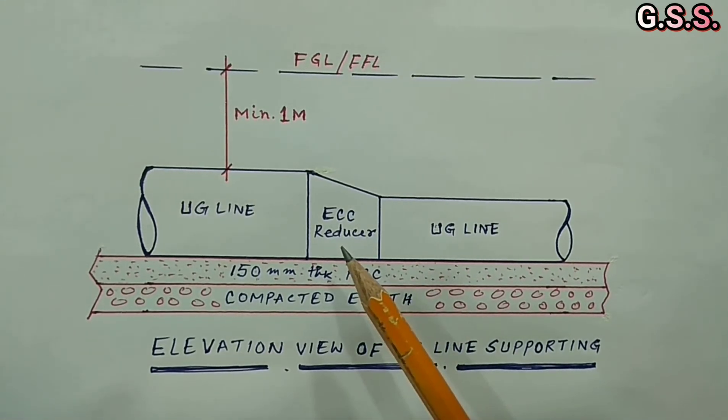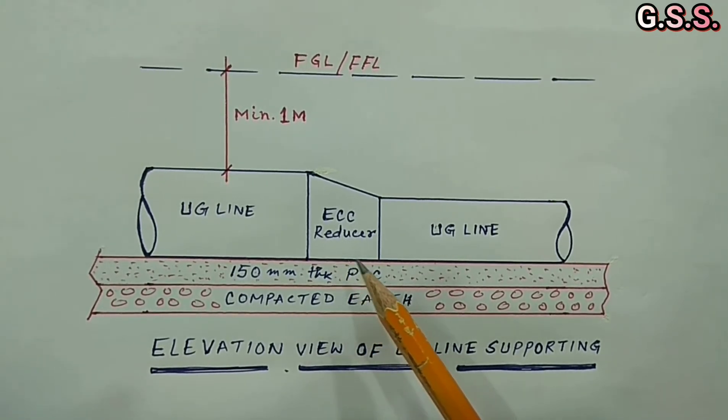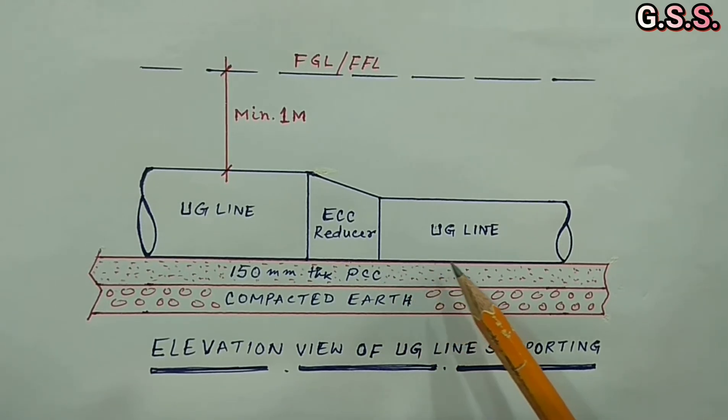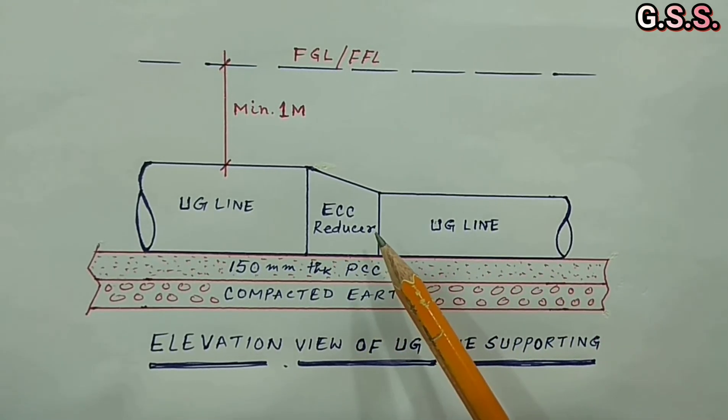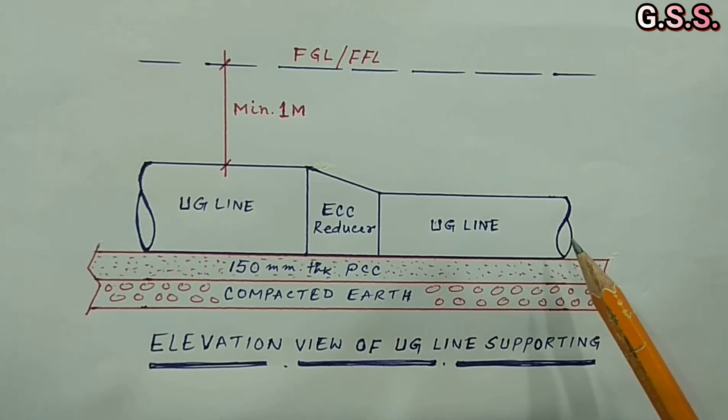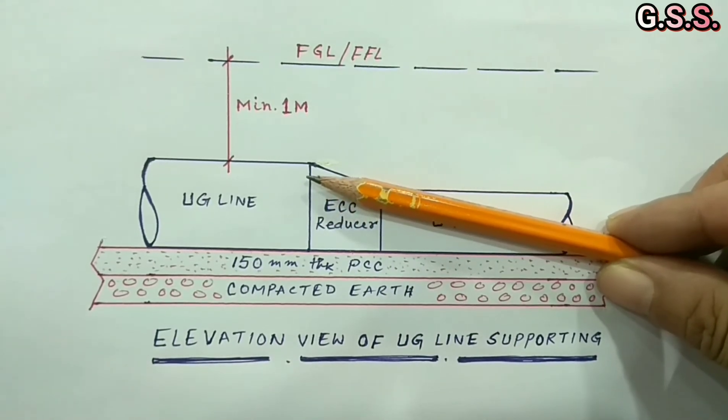If there is any size reduction, we should always provide bottom flat eccentric reducer so that entire line gets supported at bottom. If we provide concentric reducer, then bottom level of the pipeline changes which may not get supported and will create bending moment and bending stress.